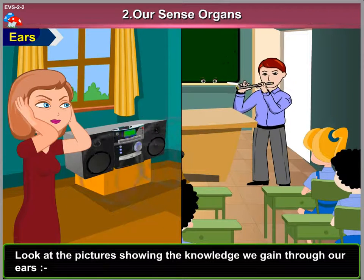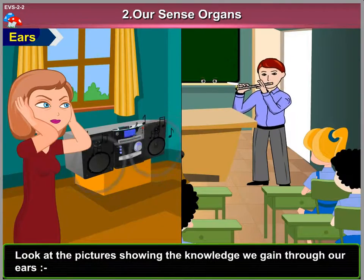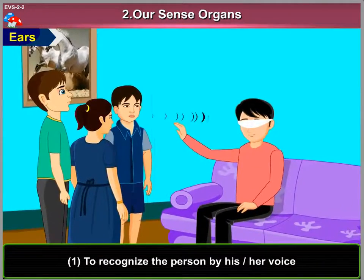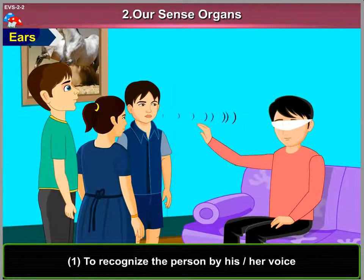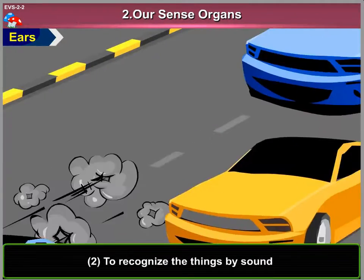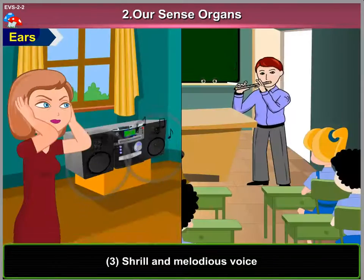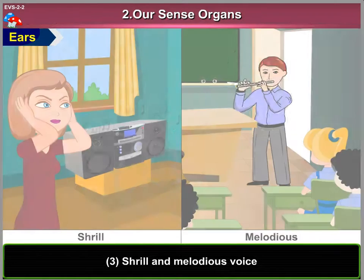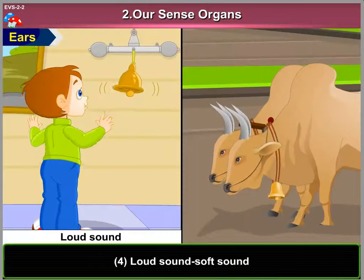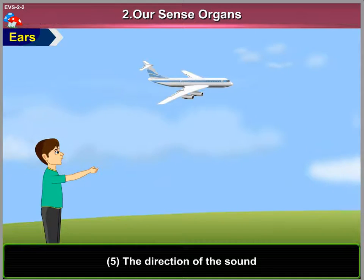Look at the pictures showing the knowledge we gain through our ears. 1. To recognize the person by his or her voice. 2. To recognize the things by sound. 3. Shrill and melodious voice. 4. Loud sound or soft sound. 5. The direction of the sound.